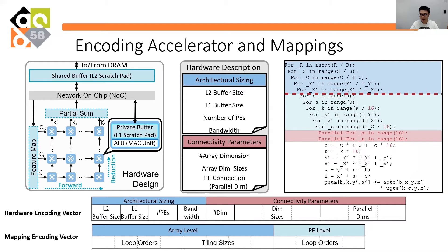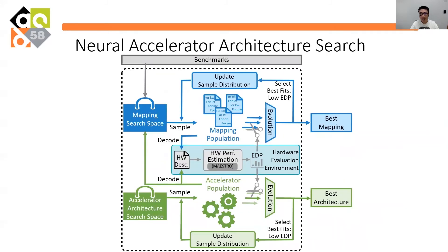The hardware encoding vector contains two parts: architectural sizing and connectivity parameters. The mapping encoding vector contains multiple parts, including loop orders at PE level and loop tiling for the array dimension level. After embedding the Accelerator Design and Compiler Strategy into vectors, we can apply machine learning algorithms to automatically search the architecture.